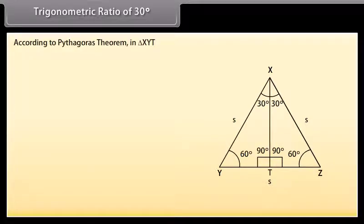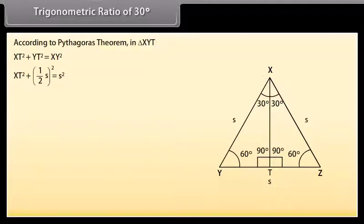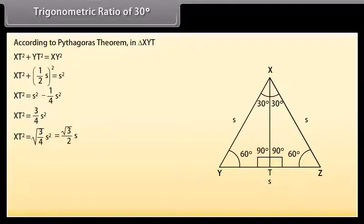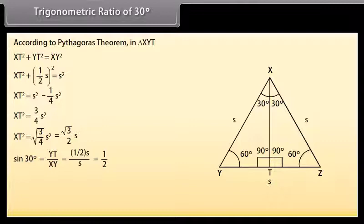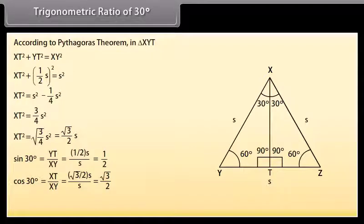According to Pythagoras theorem in triangle XYT: XT² + YT² = XY². Substituting: XT² + (S/2)² = S², giving XT = (√3/2)S. Therefore sin 30° = YT/XY = (S/2)/S = 1/2, cos 30° = XT/XY = (√3/2)S/S = √3/2, and tan 30° = YT/XT = (S/2)/((√3/2)S) = 1/√3.